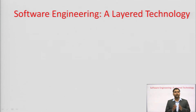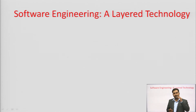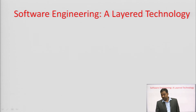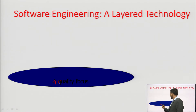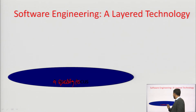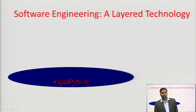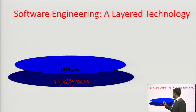Software engineering has a clear layered approach. It shows layer by layer how software processes are developed and what is being used. The first layer is quality focus.